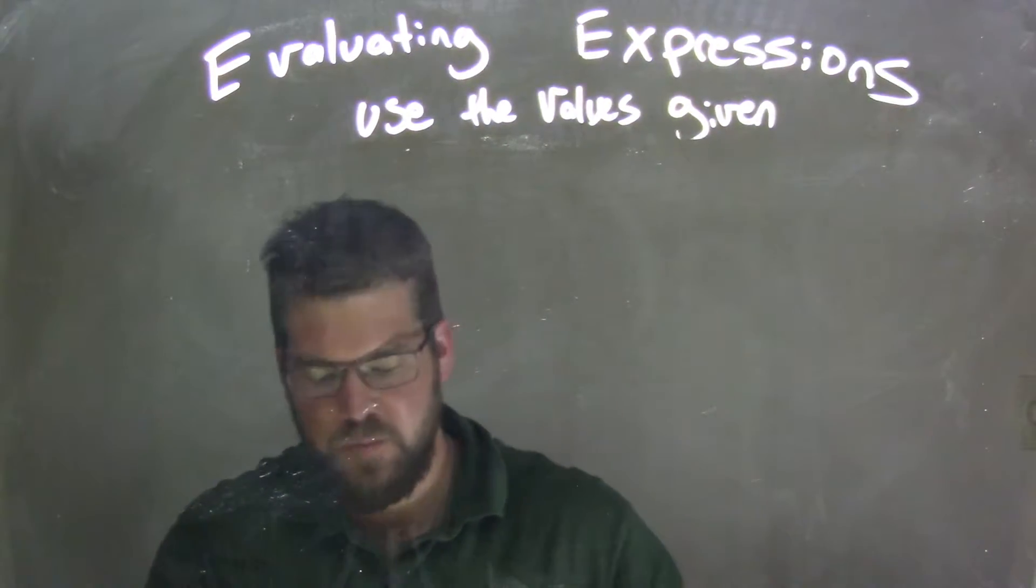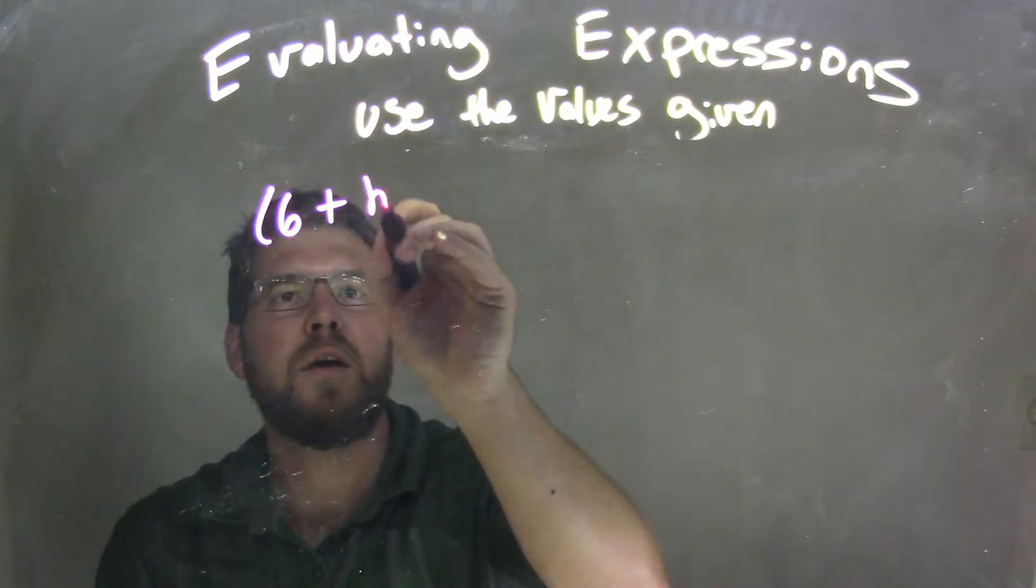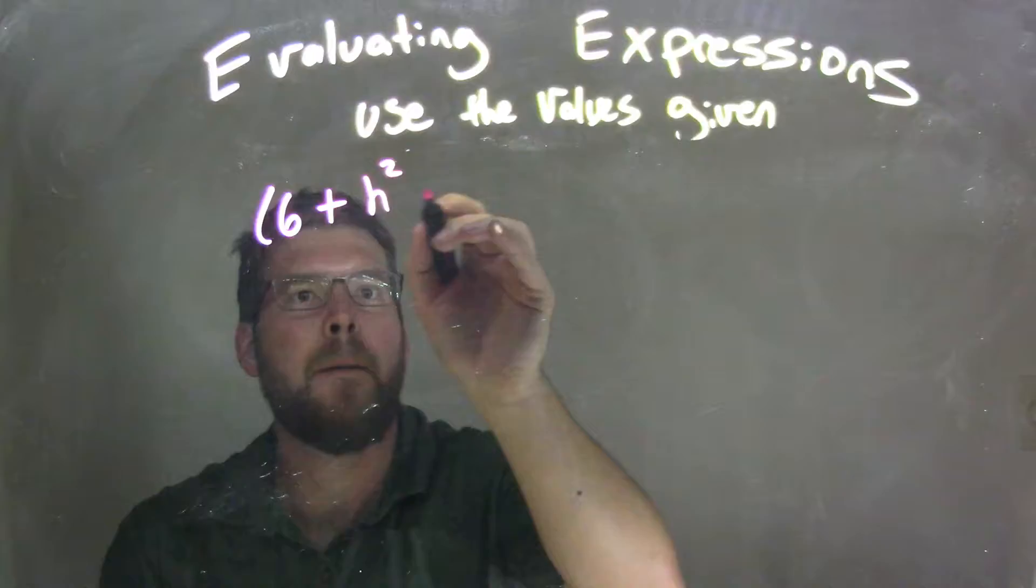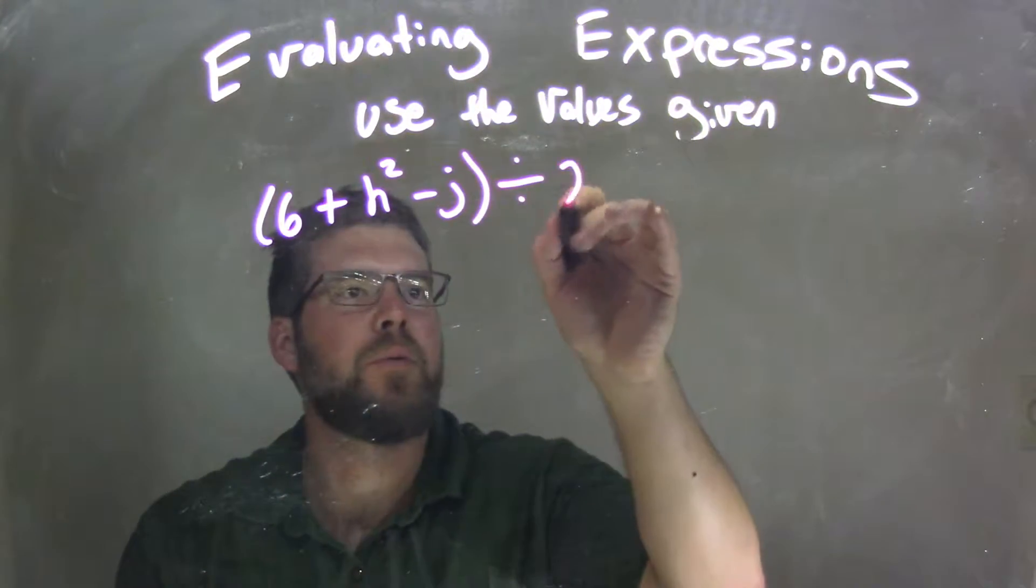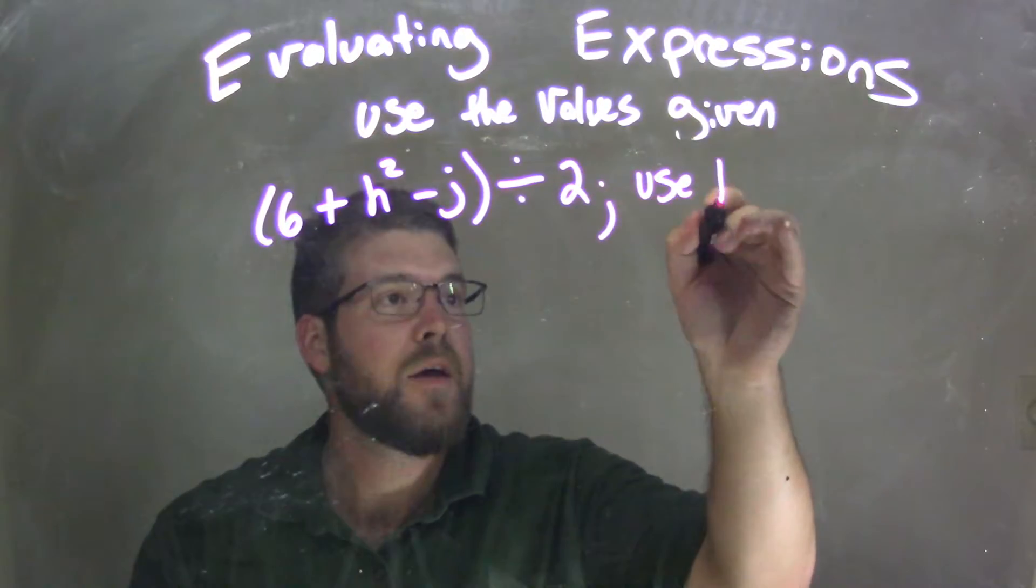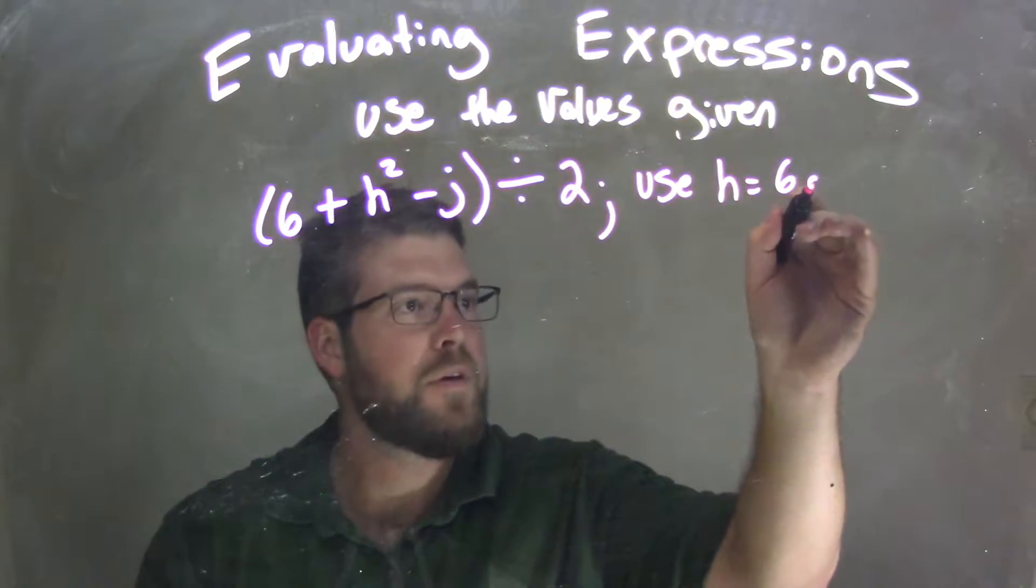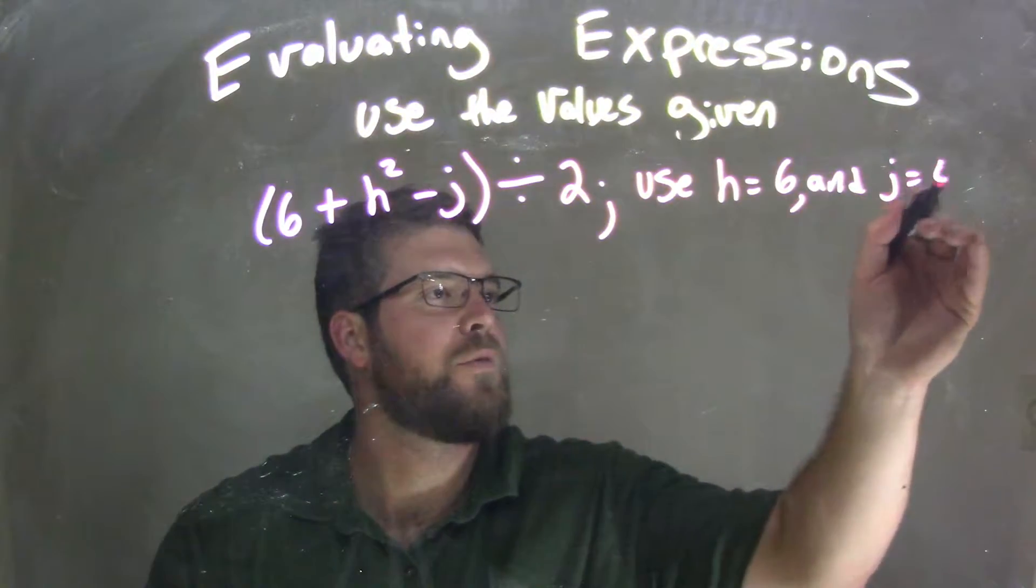So if I was given this expression, 6 plus h squared minus j divided by 2, I'm going to use h equals 6 and j equals 4.